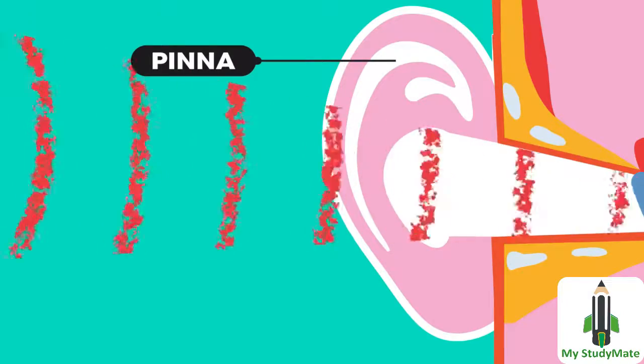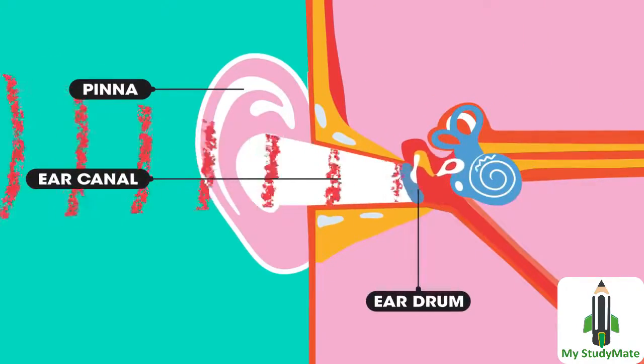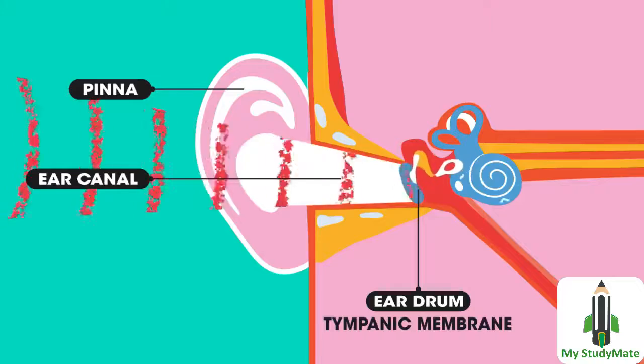The sound travels down the ear canal towards the eardrum. The eardrum is a membrane at the end of the ear canal and is extremely sensitive. It is also called the tympanic membrane. Sound waves cause the eardrum to vibrate.